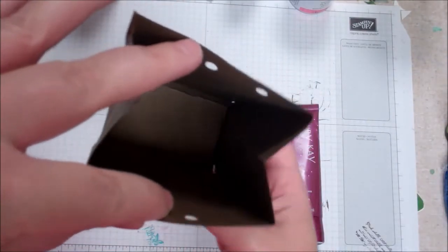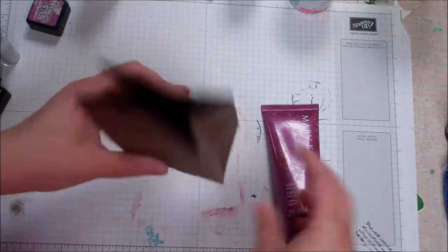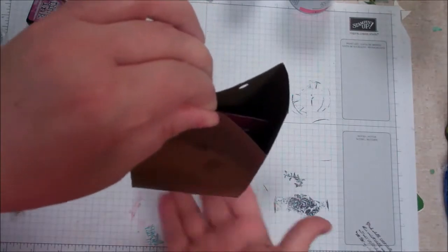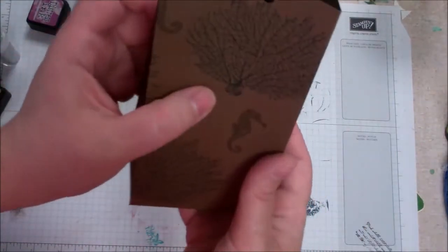And again, if you don't like how that looks, just cover it with paper. No big deal. Or stamp on it or something. And then we can slip our lotion in there and then it has some support for the bottom that won't easily poke through the bottom of our bag.